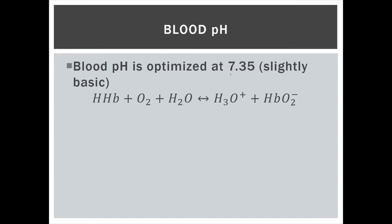The reason why this pH is important is let's take a look at the equilibrium in blood. This substance here is hemoglobin, and hemoglobin does have an H in it. In normal blood pH, this equilibrium exists where the hemoglobin will give up its H to water in the blood to create hydronium. By giving up that H, it can then absorb oxygen and carry the oxygen around.